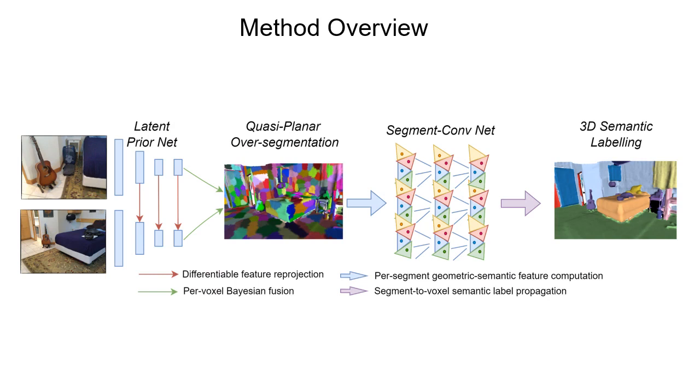First, a latent prior network enhanced with latent feature projection takes in RGBD frames and outputs 2D semantic labels, which are then lifted to 3D and aggregated over time with Bayesian fusion.